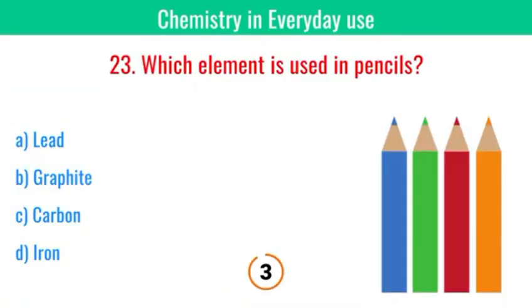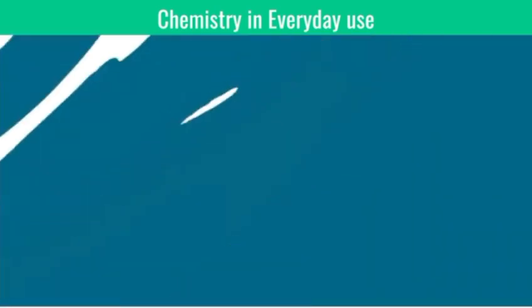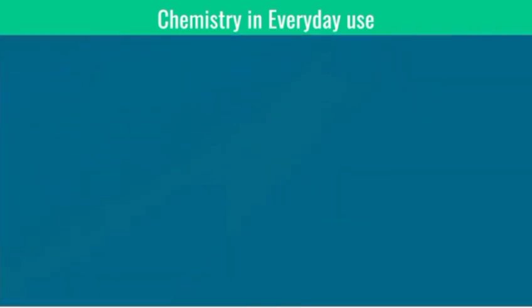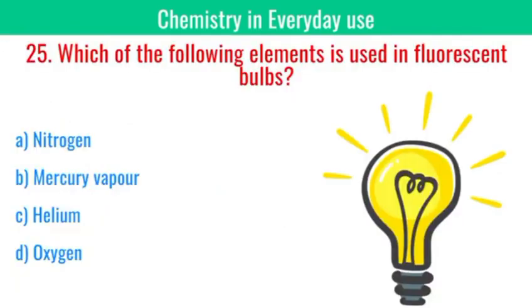Which element is used in pencils? The answer is graphite. Which of the following is used in the production of soaps? The correct answer is sodium hydroxide. Which of the following elements is used in fluorescent bulbs? The correct answer is mercury vapour.